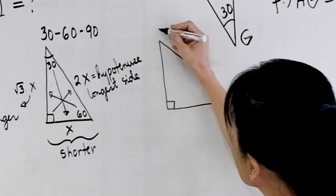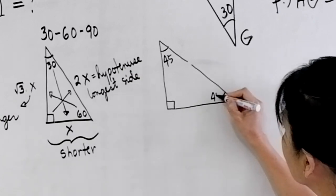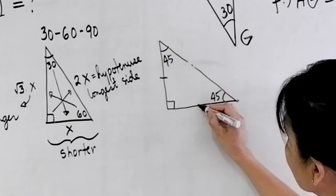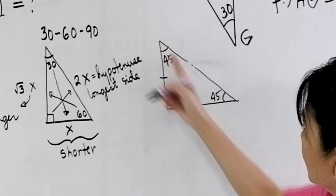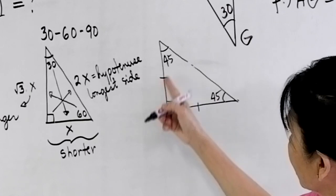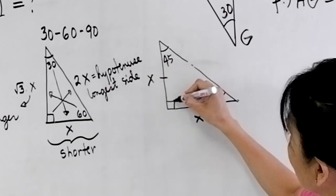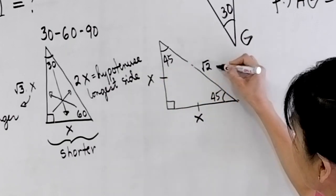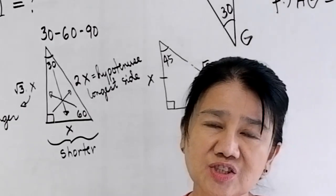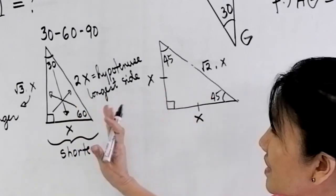Another rule for a special right triangle applies to the isosceles right triangle. In a 45-45-90 triangle, you have an isosceles triangle, so these two sides are congruent. The sides opposite the 45-degree angles are congruent. If we let each of those sides be X, then your hypotenuse will be square root of 2 times X. Now I'll give you exercises and examples for you to apply these theorems.